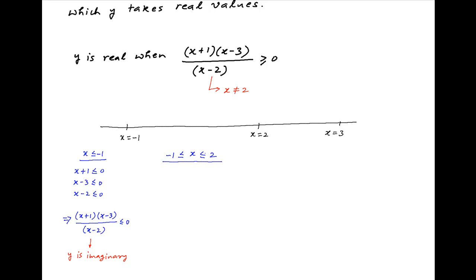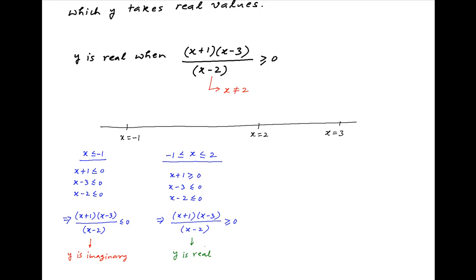Next, consider the interval when x lies between -1 and 2. x + 1 is greater than or equal to 0 in this interval, but x - 3 and x - 2 are both less than or equal to 0. Therefore, the value of the expression (x + 1)(x - 3) divided by (x - 2) will be greater than or equal to 0 in this interval, and therefore y is real in this interval.